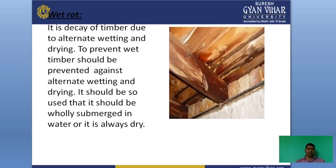The next defect is wet rot — it is decay of timber due to alternate wetting and drying. To prevent wet rot, timber should be protected against alternate wetting and drying. It should be wholly submerged in water or kept always dry. Wet rot occurs when timber gets wet and is then dried alternately, causing decay.